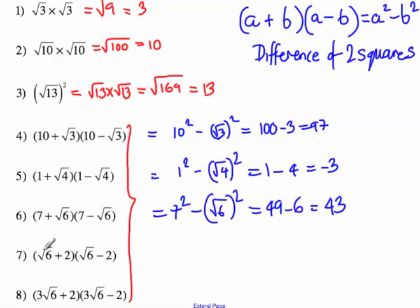Next one. First number is root 6. Root 6 squared, subtract the second number is 2 squared, which is 6 take away 4, which is 2.